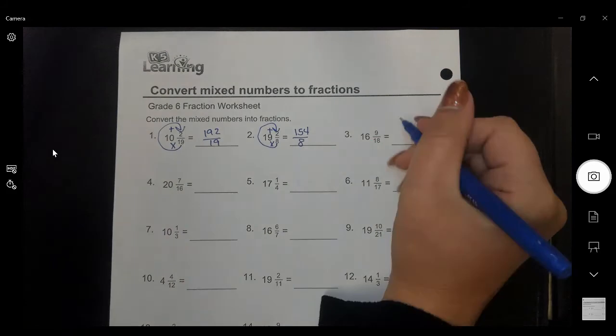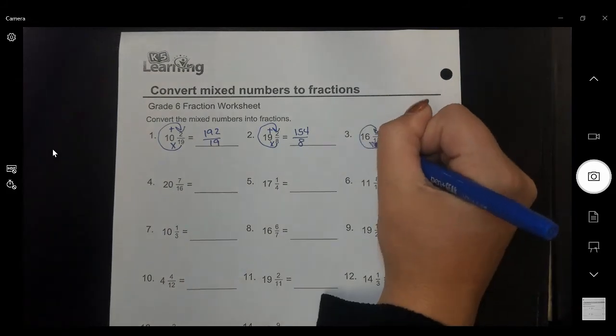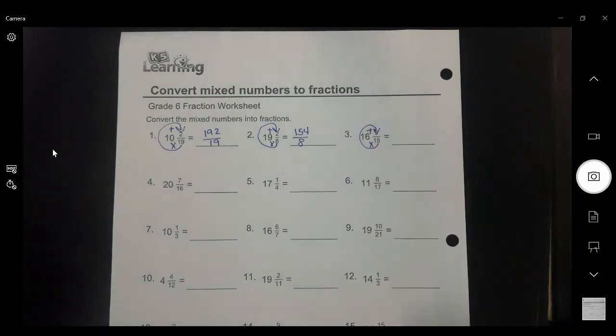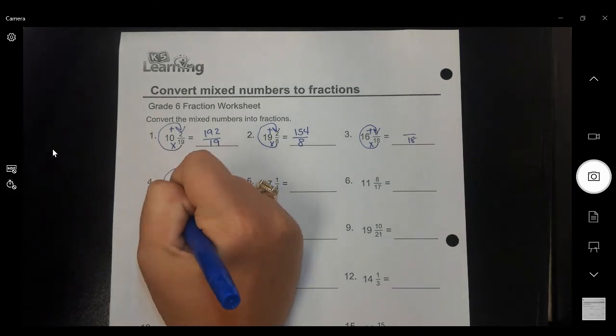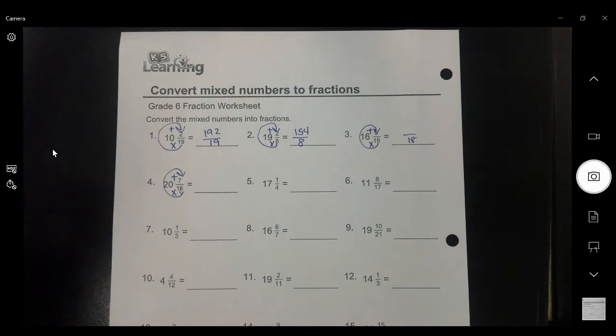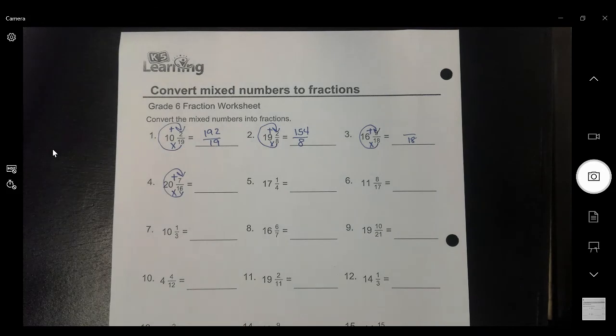So each one of these problems, you need to go around the world. You need to multiply, then add, and then keep the denominators the same. Around the world, multiply, then add. That's all you have to do for this side of the paper.